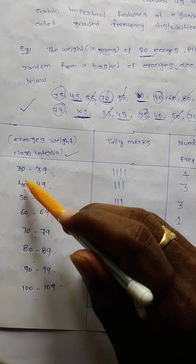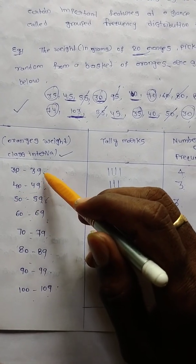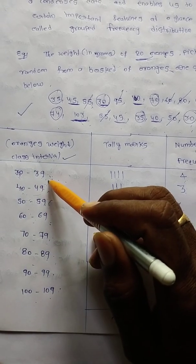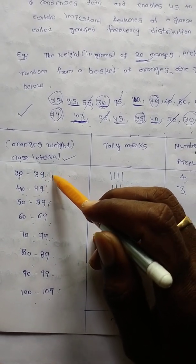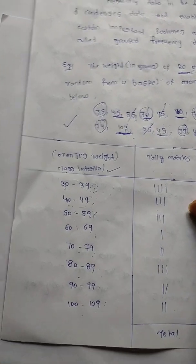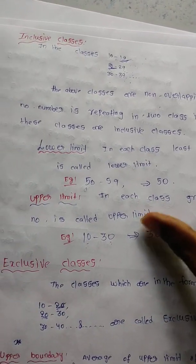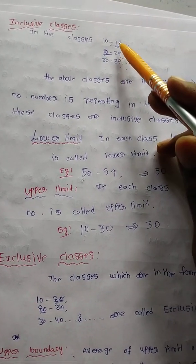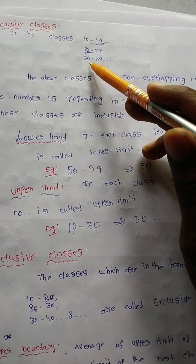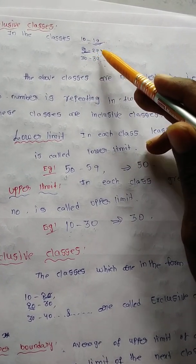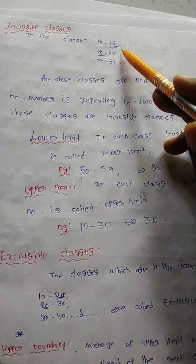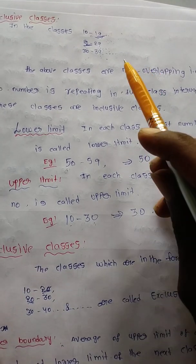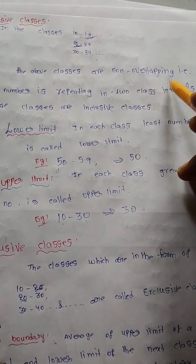In the grouped frequency distribution table, the class intervals such as 30–39, 40–49 are listed. The smallest number in a class, like 30, is the lower limit, and the largest number, like 39, is the upper limit. Classes such as 10–19, 20–29, 30–39 are called inclusive classes — they are non-overlapping.